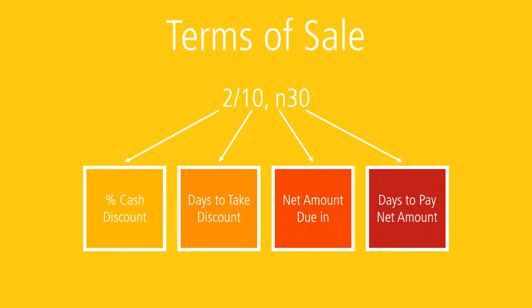Cash discounts are offered in terms of sale. A transaction with no cash discount would have terms of sale of net 30, meaning the net amount of the invoice is due in 30 days. If a cash discount is offered, the terms of sale would be written as 2/10 N30 — meaning a 2% cash discount may be taken if the invoice is paid within 10 days. If not, the net amount is due in 30 days.